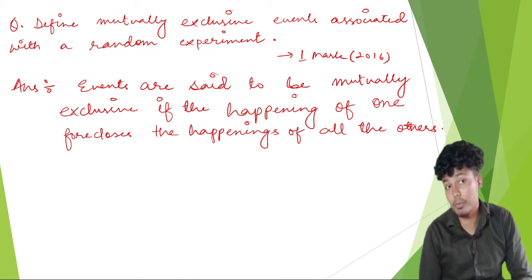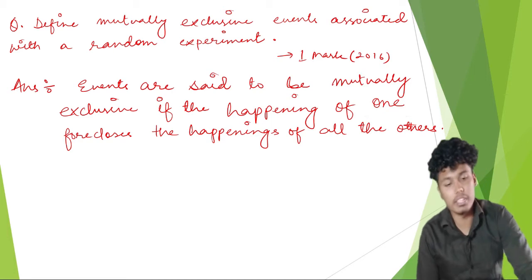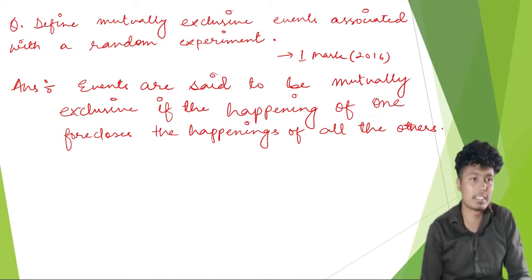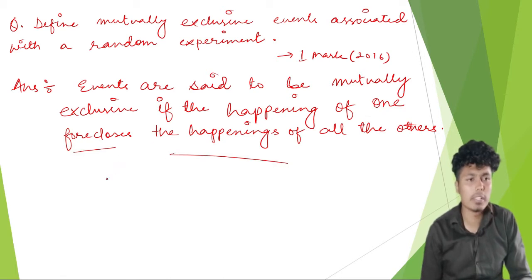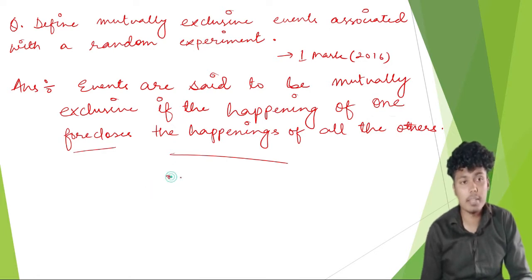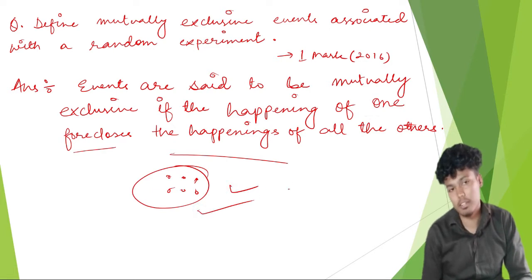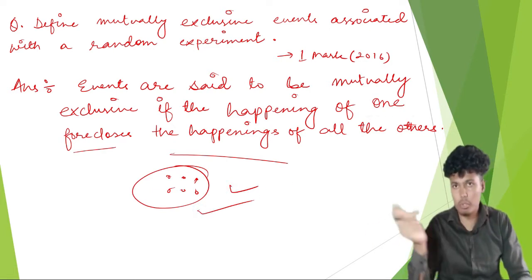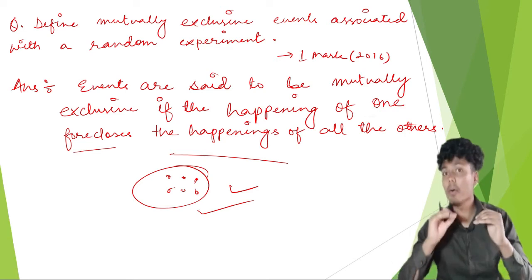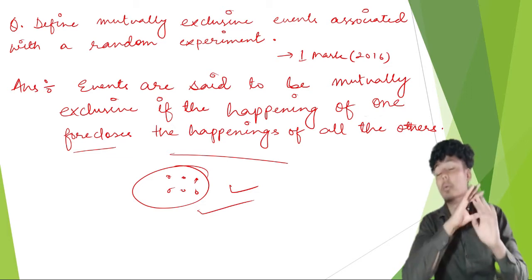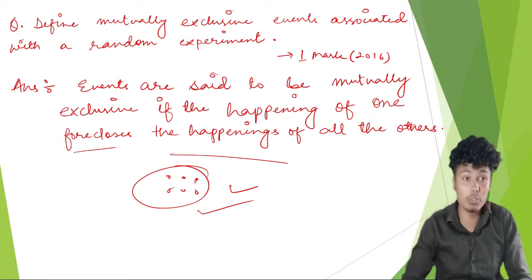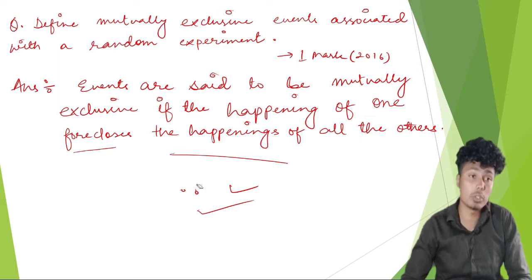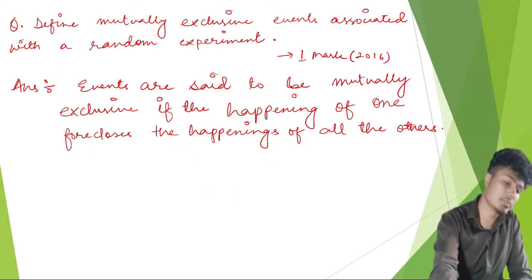The definition of mutually exclusive events was also asked in 2016 for one mark — so the question got repeated. Events are said to be mutually exclusive if the happening of one forecloses the happening of all the others. If six happens in Ludo, the remaining numbers one, two, three, four, five will not appear.